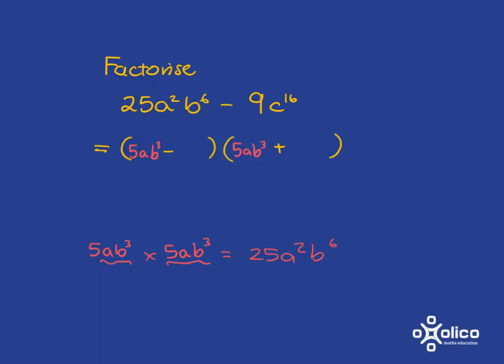And then for this other one, we're asking what, multiplied by itself, will get us to 9c to the 16. Well, we know that 3 times 3 gets us to 9, so that is no problem. Then, what power do we need to put with the c's? Well, we want to end up with 16c's multiplied together. So we need 8c's here, and another 8c's multiplied together there to get us to that. And so here is our nicely factorised form.